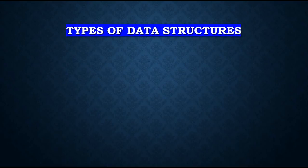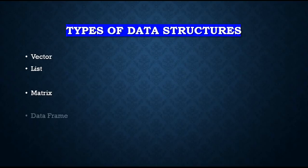Types of data structures in R. There are six types of data structures in R. They are vector, list, matrices, data frames, arrays, and factor.